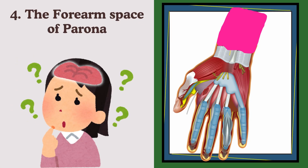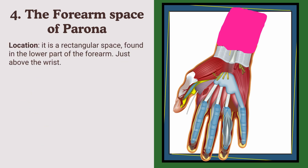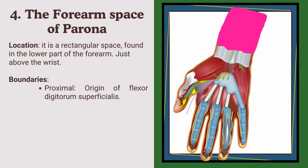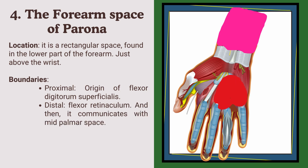The forearm space of Parona is above the wrist, but since it is related to the mid-palmar space we will discuss it here. Location: it is a rectangular space found in the lower part of the forearm just above the wrist. Boundaries: proximally it begins at the origin of flexor digitorum superficialis, distally it ends at the flexor retinaculum, and then it communicates with the mid-palmar space.